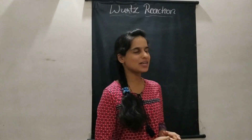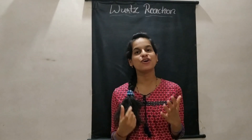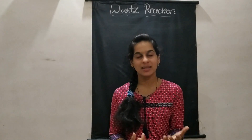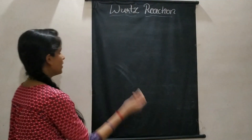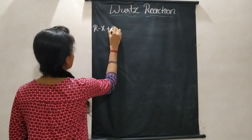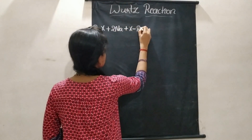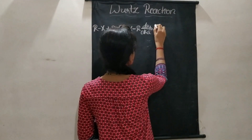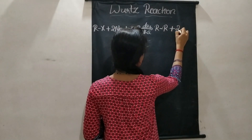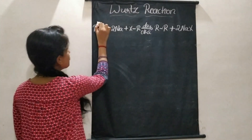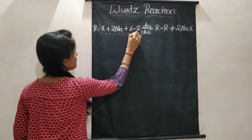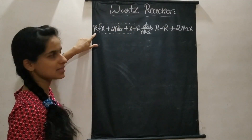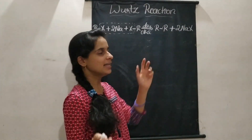Let us come to today's topic: Wurtz reaction. Wurtz reaction is a reaction of alkyl halides and is a preparation method of alkanes. In this reaction, 2 molecules of alkyl halides react with sodium metal in dry ether to give a higher alkane and sodium halide. The two R groups attached to the halogen atoms are joined together to form the alkane.